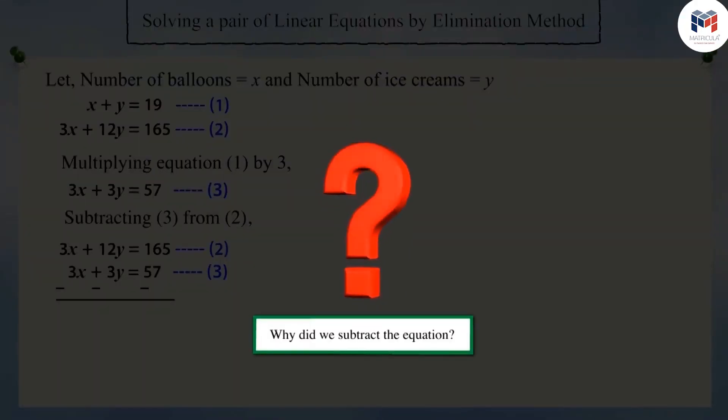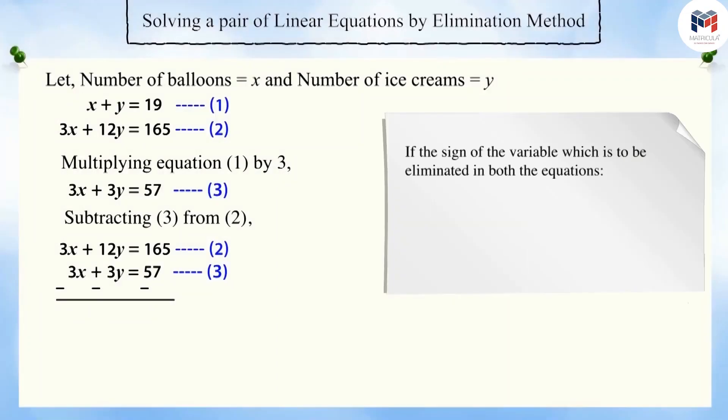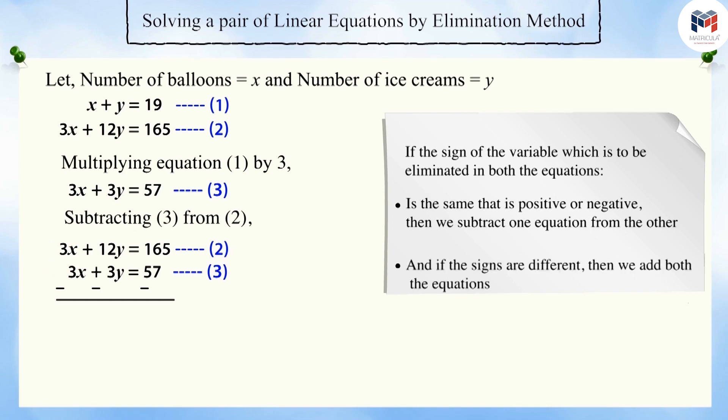Correct! If the sign of the variable which is to be eliminated in both the equations is the same, that is positive or negative, then we subtract one equation from the other. And if the signs are different, then we add both the equations. This eliminates one variable and gives a linear equation in one variable only.